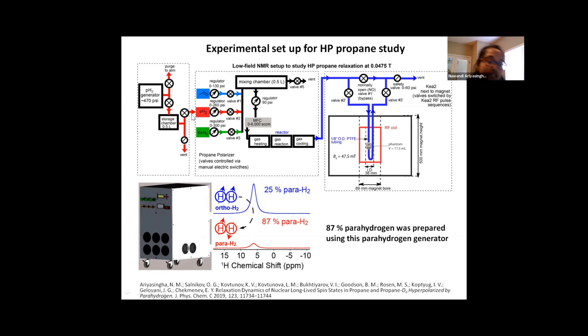In the parahydrogen generator, which is also shown here, that we used for this study produced 87% enriched parahydrogen, and then it was fed into the propane polarizer using a separate line. In the polarizer setup, we have the mixing chamber where we used to prepare gas mixtures of interest, in this case using parahydrogen and then the precursor molecule which is propylene.